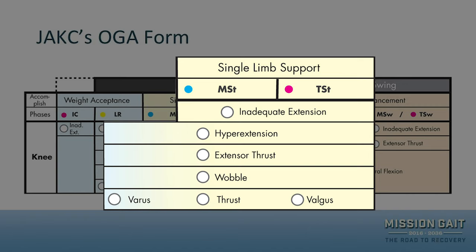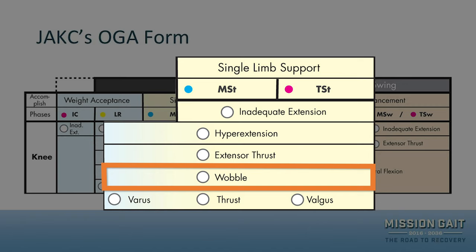If somebody has an extensor thrust, you would mark both extensor thrust and hyperextension on the form. Hyperextension is the static position and extensor thrust is the forceful movement into that extension.